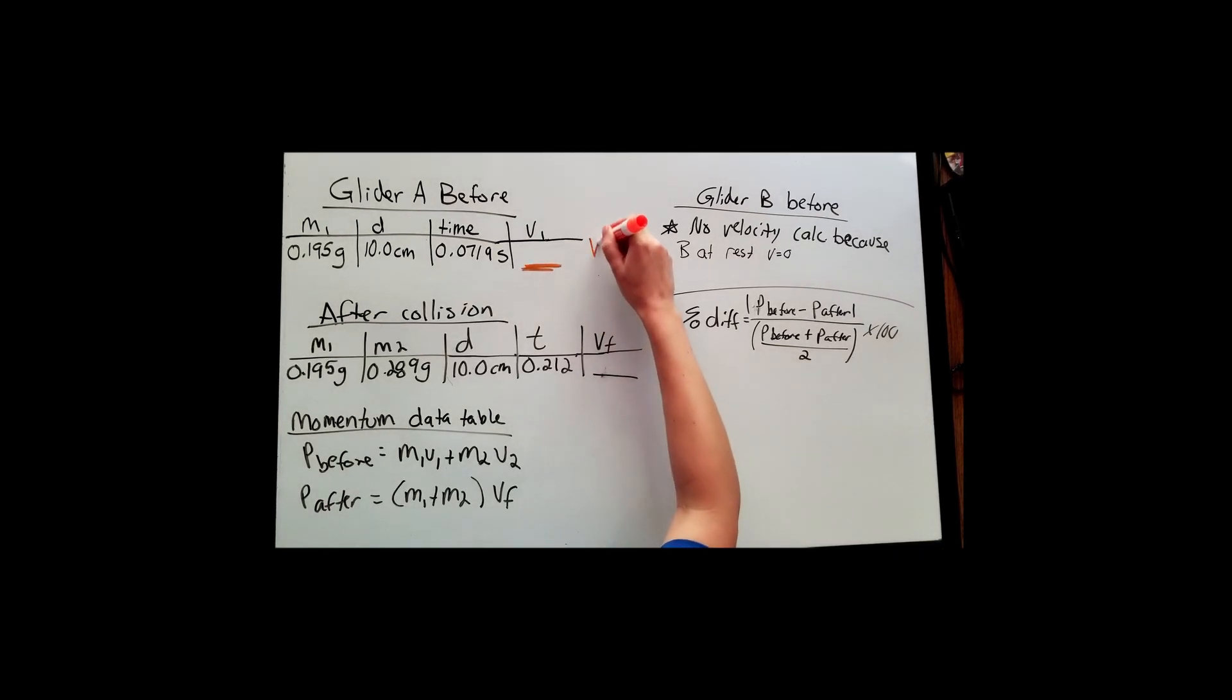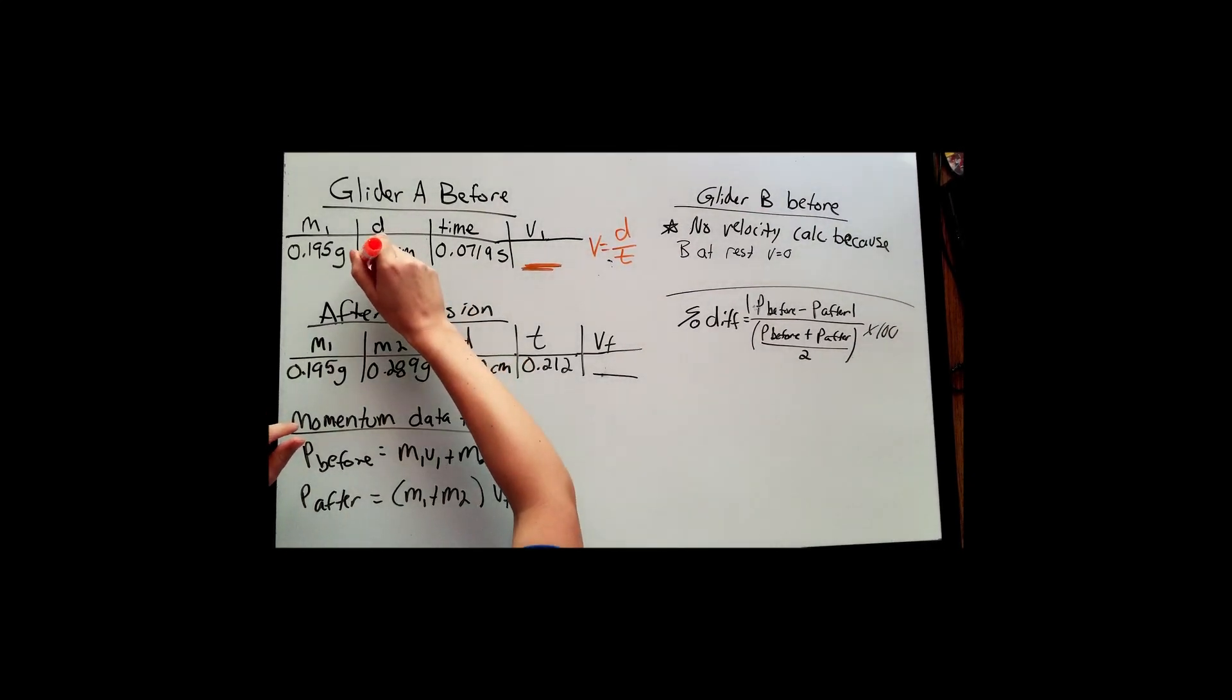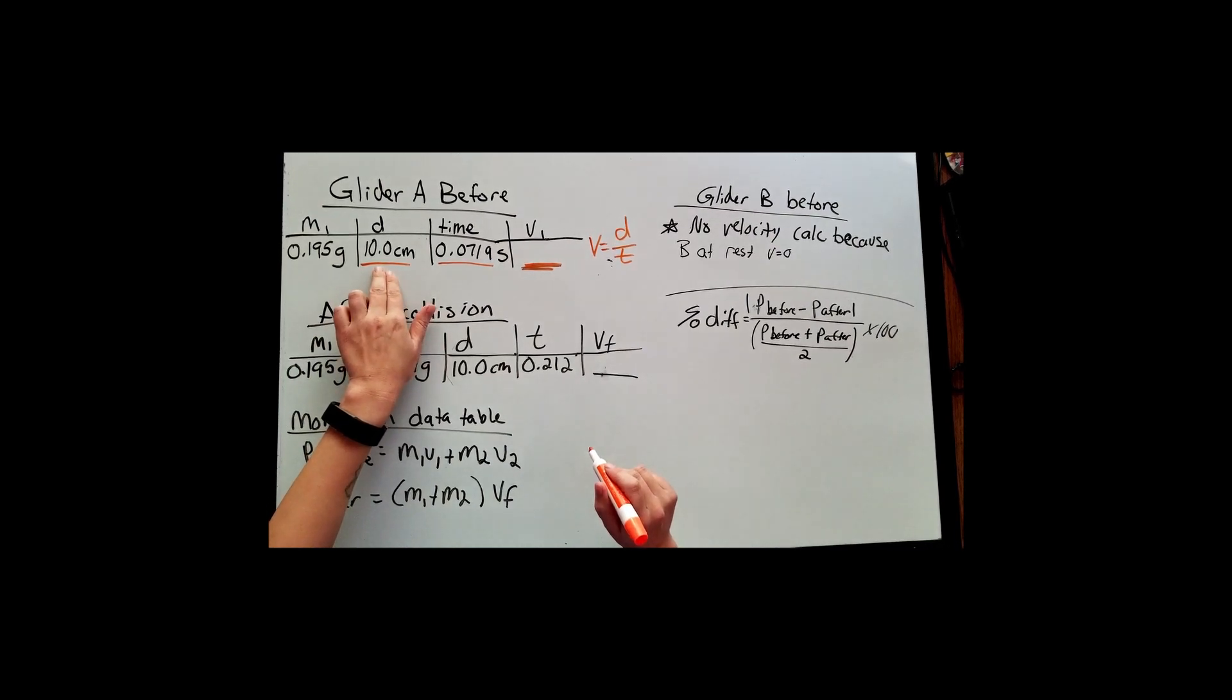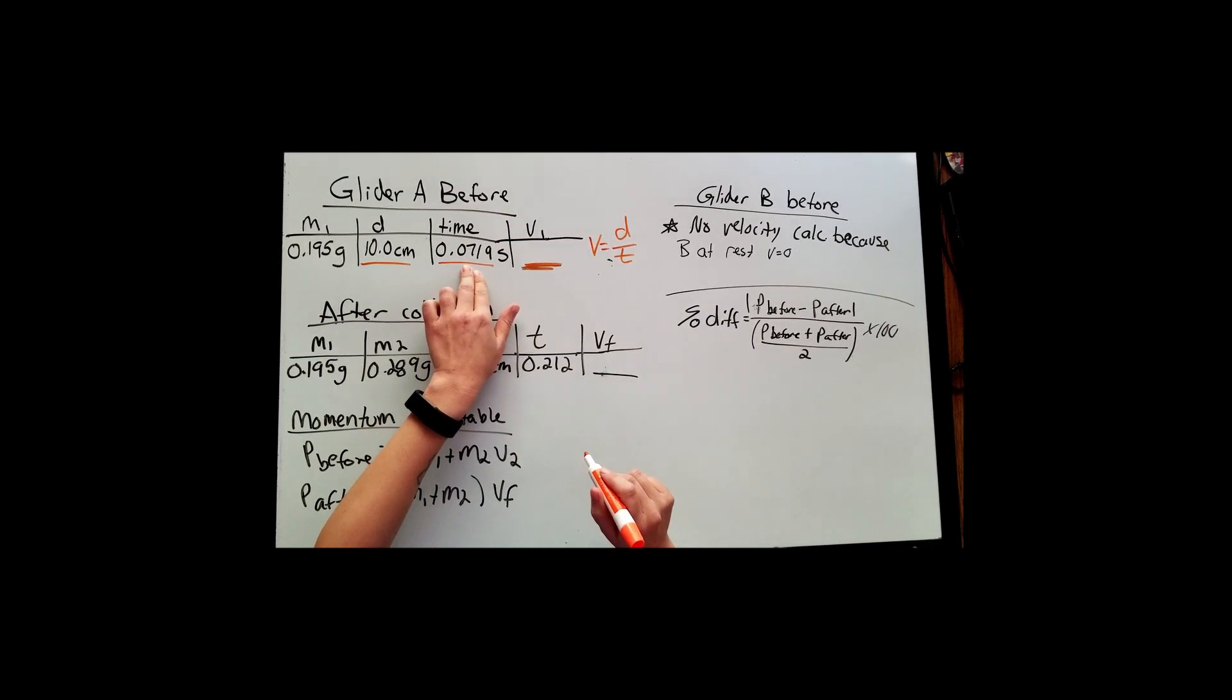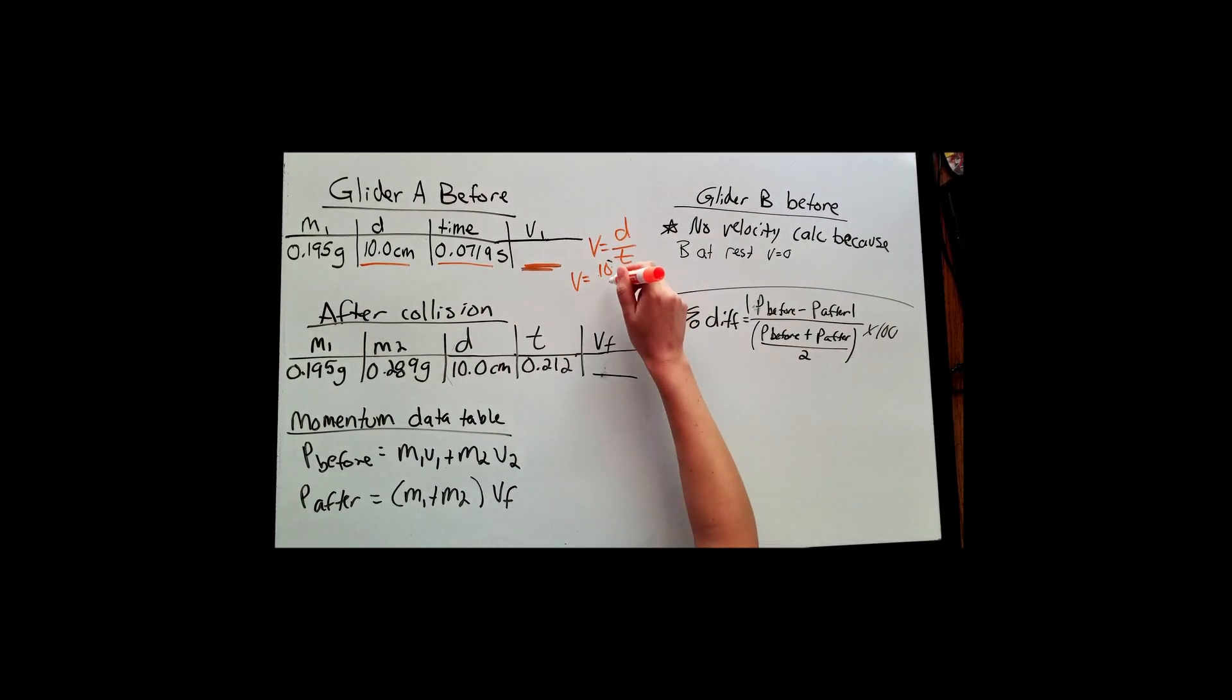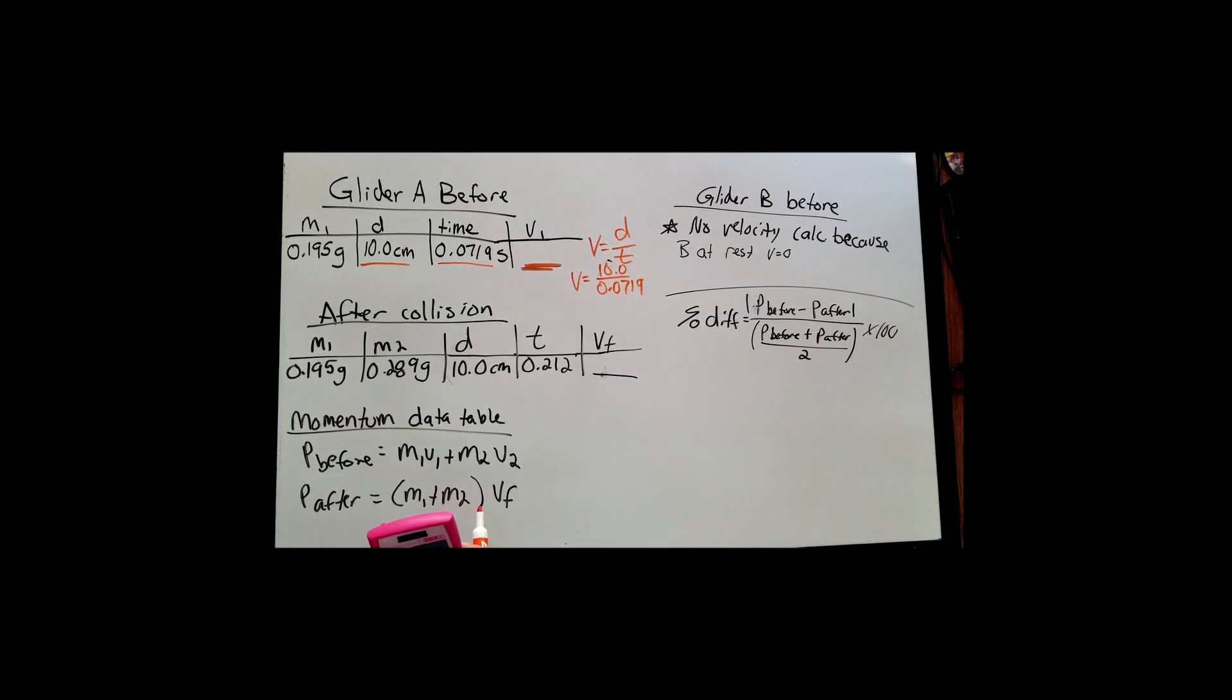In order to solve for velocity, we're going to use the equation distance over time. So when we sent that glider through that photogate, that timer, it had a flag on it that was 10 centimeters long. So what the timer measured was the amount of time it took for that flag to go through that photogate. We have a total distance of 10 centimeters, and the time it took for that 10 centimeters to go through the gate was 0.0719 seconds. To figure out the velocity, we're just going to plug in those numbers from the table. So we have 10 on top, 0.0719 seconds on the bottom.